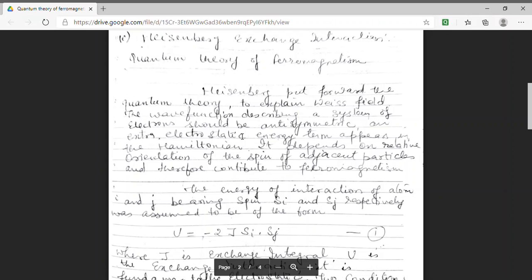Heisenberg put forward the quantum theory which explains the Weiss field theory of ferromagnetism. In this quantum theory, it was assumed that there exists a wave function and this wave function describes the system of electrons which should be anti-symmetric. So, if we have a Hamiltonian, then an extra energy term will appear.